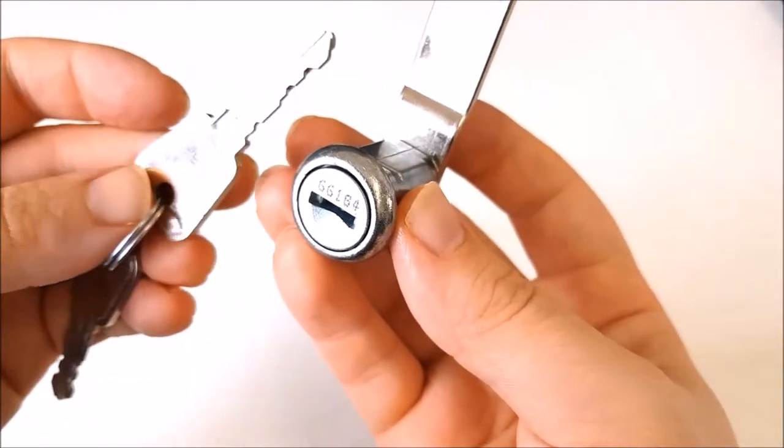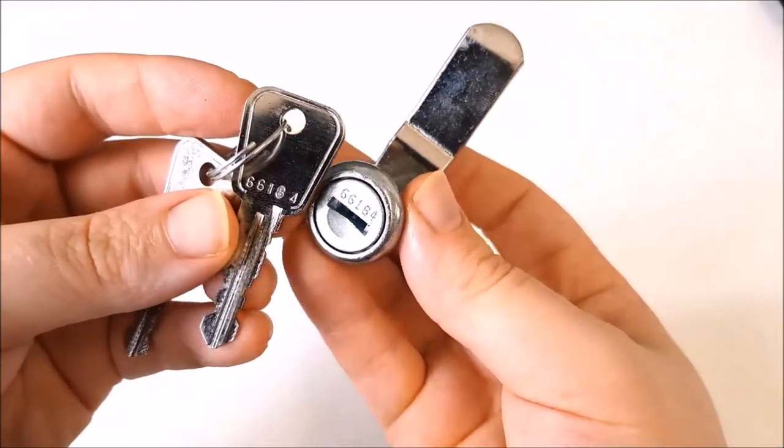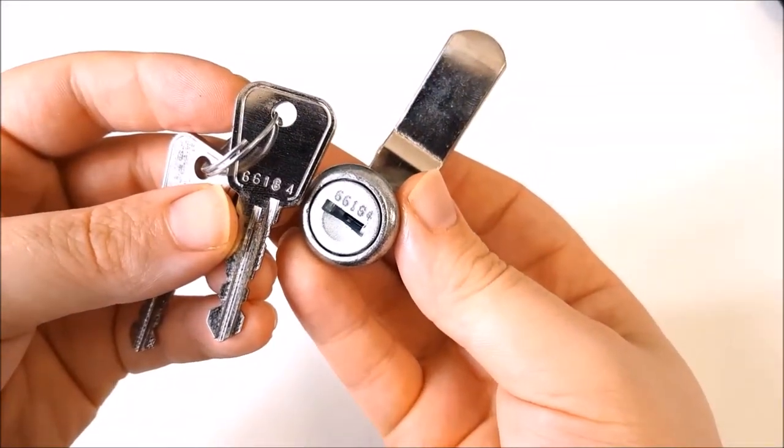If you're looking to replace a certain type of lock, or a key for a lock, then you can find your series number on either the barrel or on the key as I'm showing here.